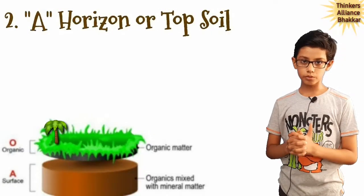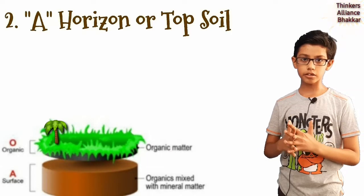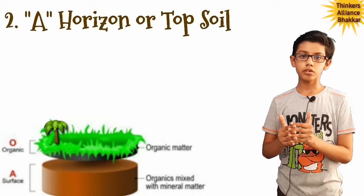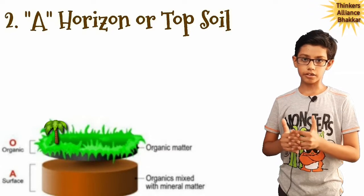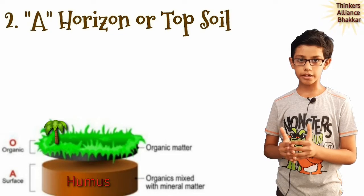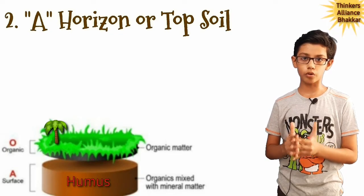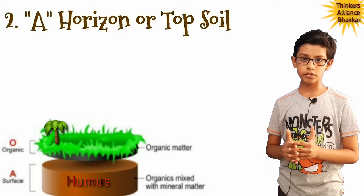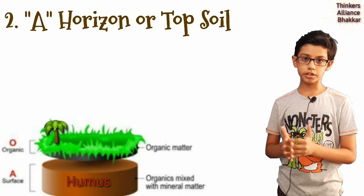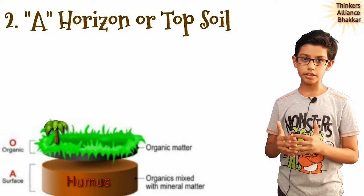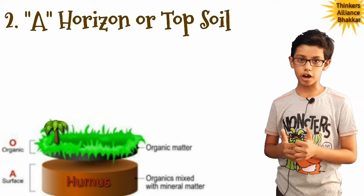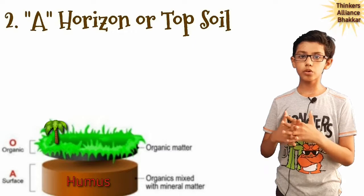Number two, A horizon or topsoil. A horizon has humus in it. This makes the A horizon soft and porous. For this reason, seeds germinate in this layer and the roots of small plants grow here.